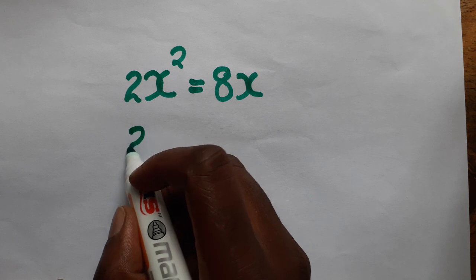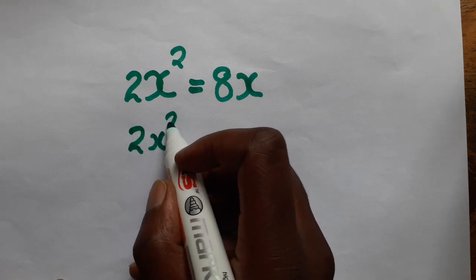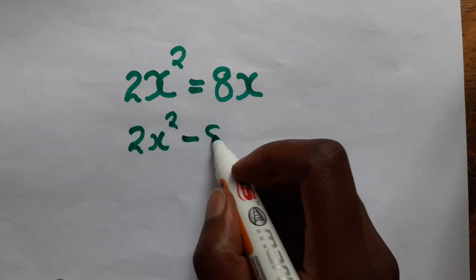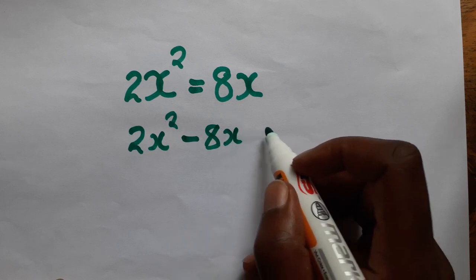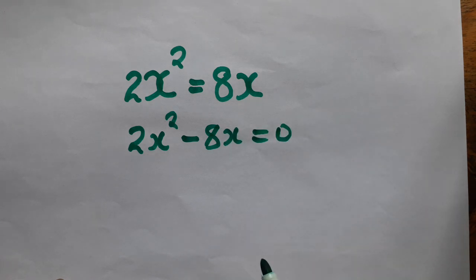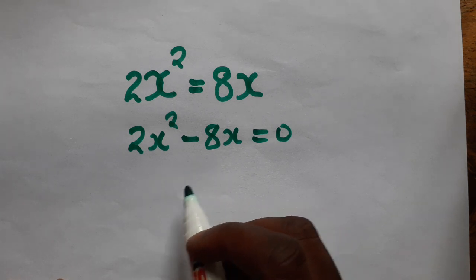What we are supposed to do is write it in this manner. Then when we do this, we factorize this side.